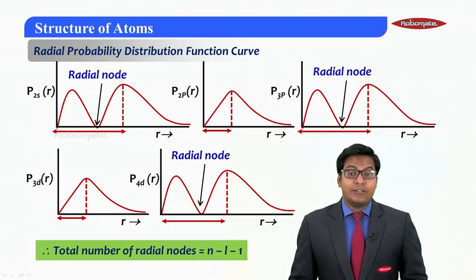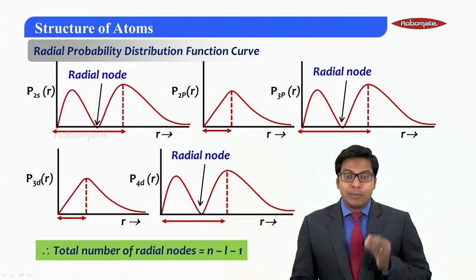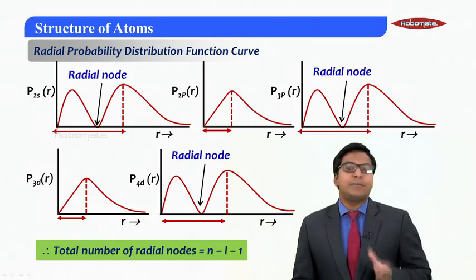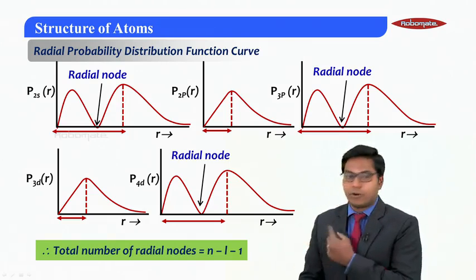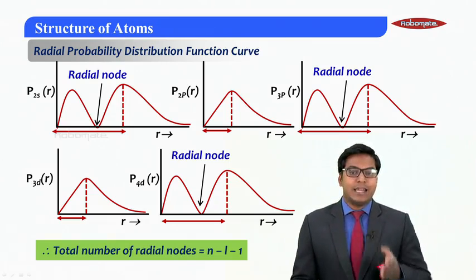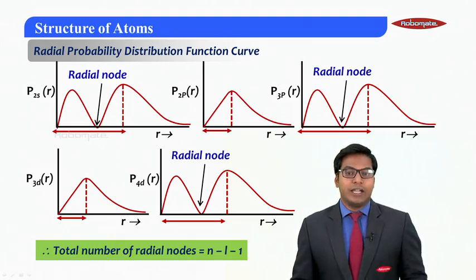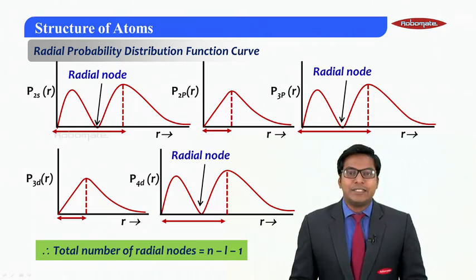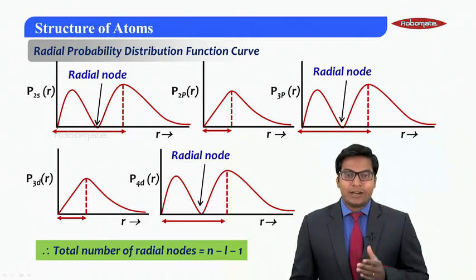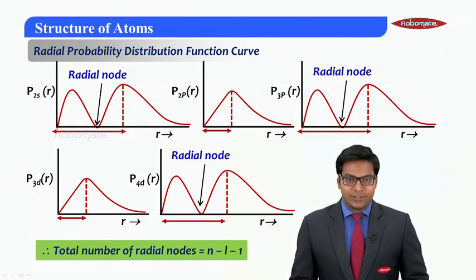Therefore to calculate the number of radial nodes for any particular orbital we can use this formula - that is n minus l minus 1. So from there we can get what is the total number of radial nodes. As we go for the next module, we will see about the planar nodes or the angular nodes. Thank you.